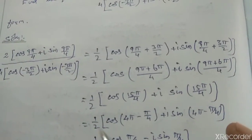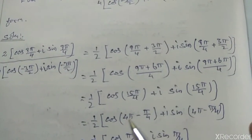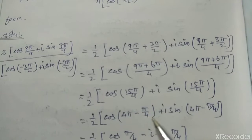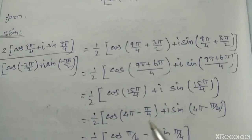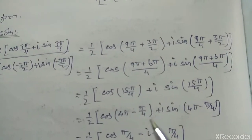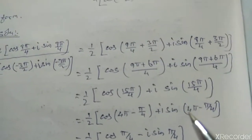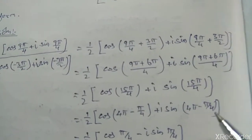Now 1/2 times 15π/4 can be written as 4π minus π/4, since 16π minus π equals 15π. So this becomes cos(4π - π/4) plus i sin(4π - π/4).